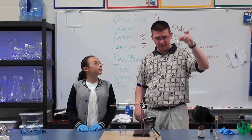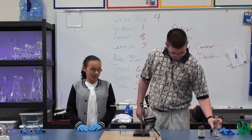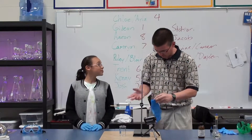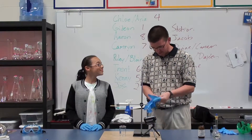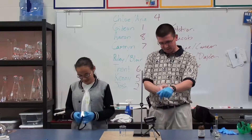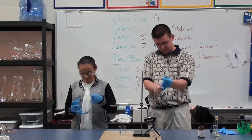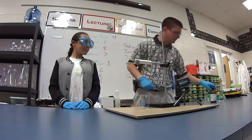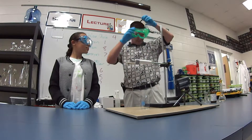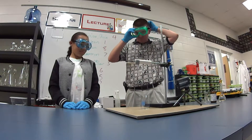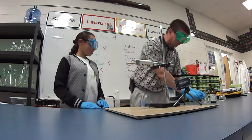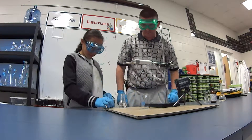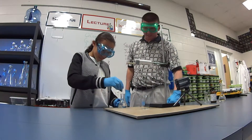We're going to pour the hexamethylenediamine in first. Let's go ahead and put some gloves on. You've already got yours — I'm going to put mine on. And you can go ahead and get your goggles there too, because these chemicals are things we don't really want to get on us. We're going to add a little bit of food coloring — just one drop into the hexamethylenediamine.